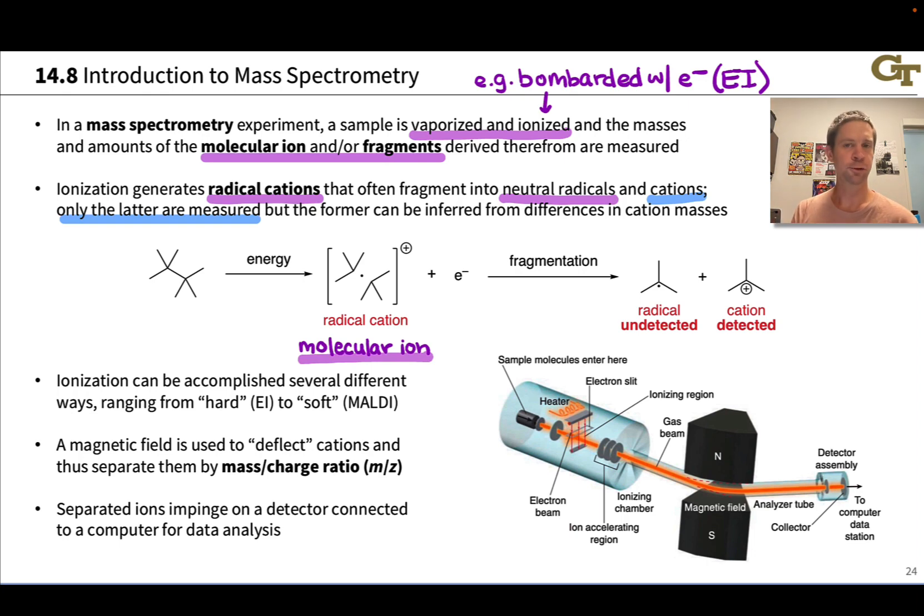The ionization can be accomplished a few different ways. These range from hard ionization methods which produce a very high energy molecular ion that tends to fragment a great deal, to very soft ionization methods that gently produce a molecular ion that tends to fragment less. MALDI, matrix assisted laser desorption ionization, is one of the most popular methods for soft ionization.